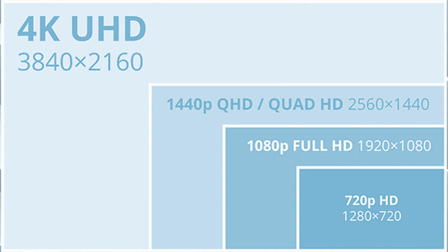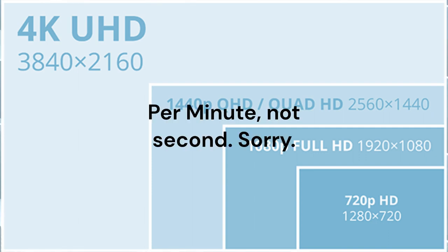If you're running 1440p, or 2K, which is pretty common, at 60 frames per second, that is 671 billion pixels it must change per minute.